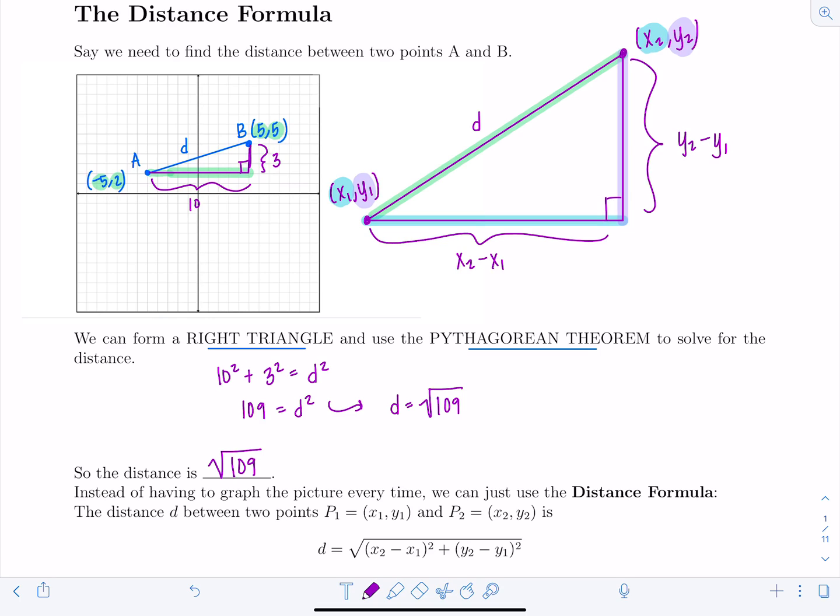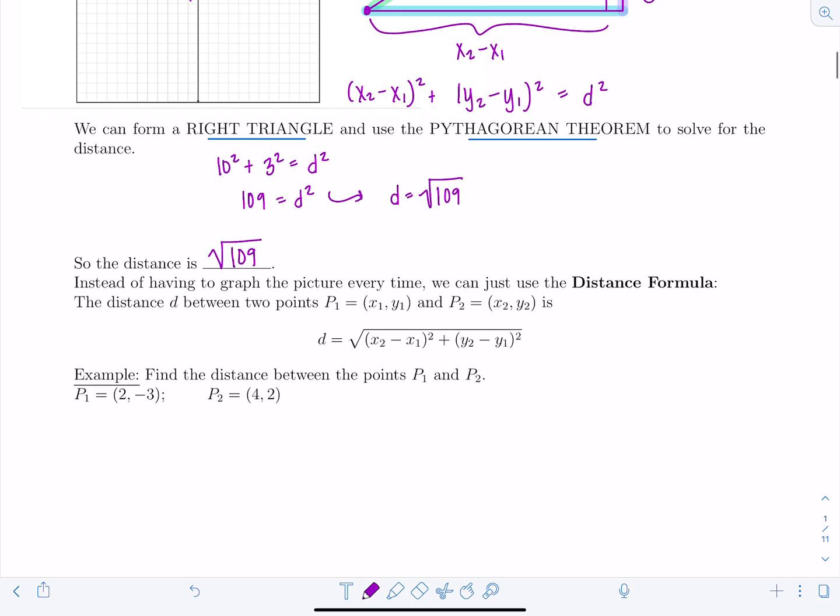Very good. So then now if I apply the Pythagorean theorem, I'll have (x₂ - x₁)² + (y₂ - y₁)² is equal to the distance squared. And this is basically where the distance formula comes from. If I take the square root of both sides, then now I have distance equals √[(x₂ - x₁)² + (y₂ - y₁)²]. Okay, so just memorize it. You're going to use it for the rest of your math career. It's not going anywhere, so it's definitely appropriate to put it to memory.